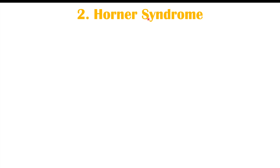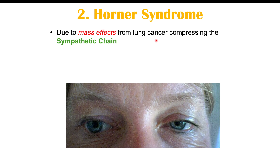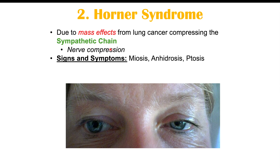Another facial finding is Horner syndrome, again due to mass effects from the lung tumor — this time compressing the sympathetic chain. There are nerves that run through the chest and into the head, and if a cancerous mass compresses them, it disrupts neural functioning, resulting in Horner syndrome. Its signs include miosis — a constricted pupil.